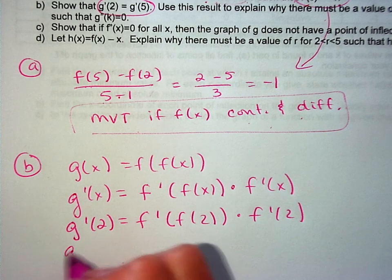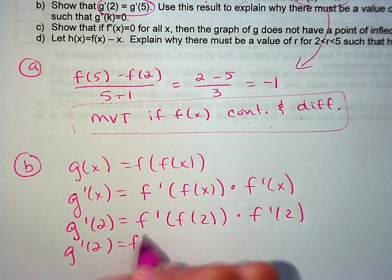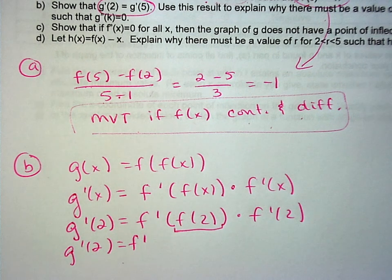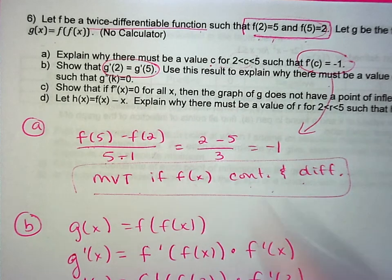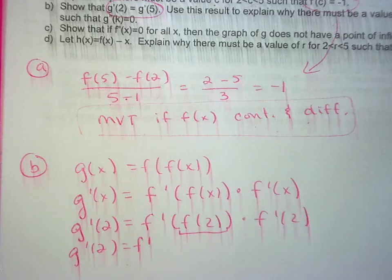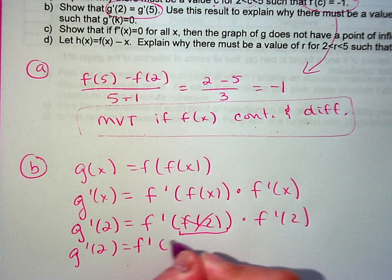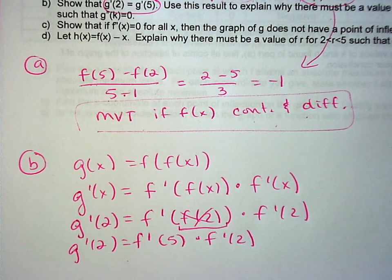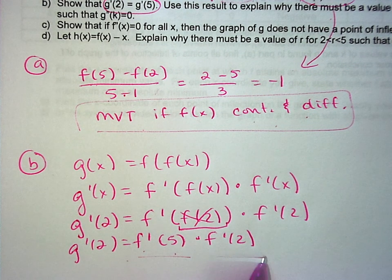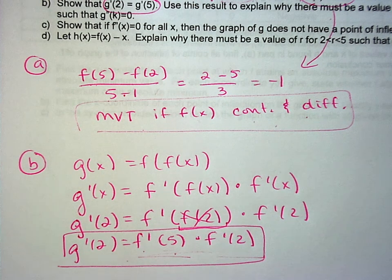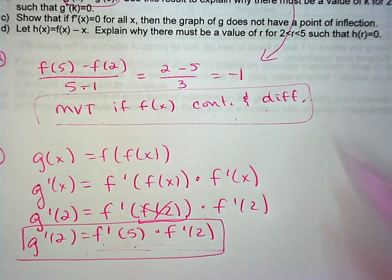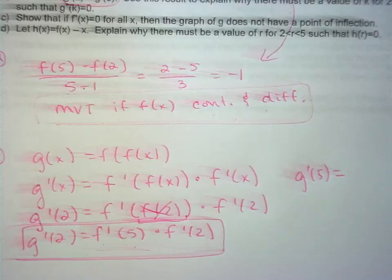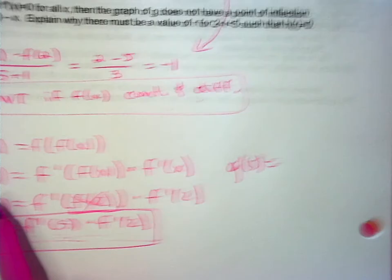From the problem stem, f(2) = 5, so we replace f(2) with 5. Therefore g′(2) = f′(f(2)) · f′(2) = f′(5) · f′(2). We don't have numerical values for either of these, so we leave it in this form. Now we do the same thing and find g′(5).